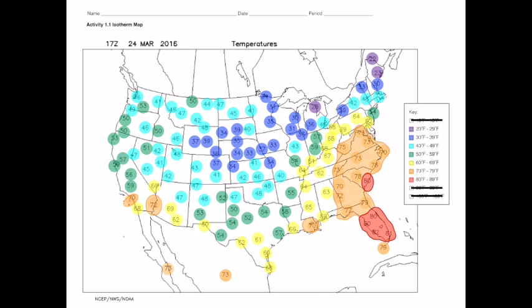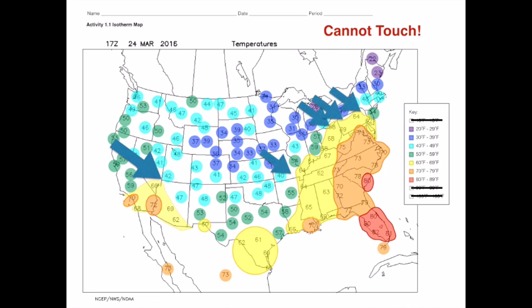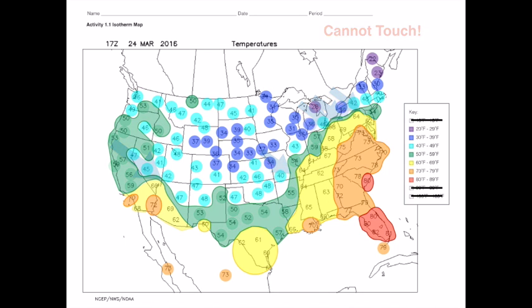Next I'll draw a line to contain all the 70 degree temperatures and shade them in orange. I do the same thing for the 60s. This is where I start to run into a problem — 60 degree temperatures can't touch 40 degree temperatures directly. Somewhere in between them they have to be 50 degrees. I'll have to account for this when I shade in the green area.